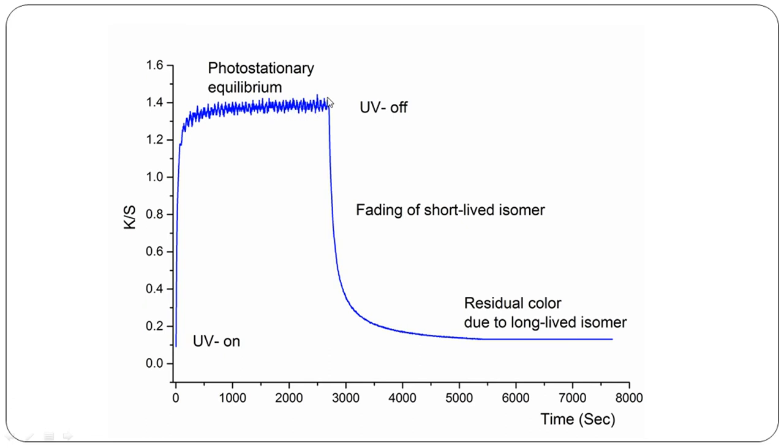After that we go for UV off. Once UV off it becomes colored to colorless. In this case we can get slower reactions. There are some residual color because of long-lived isomers.